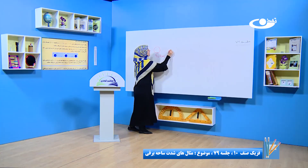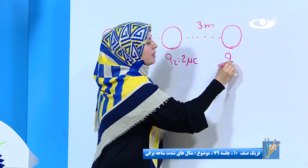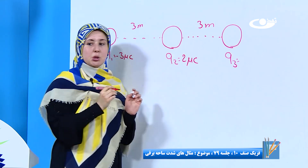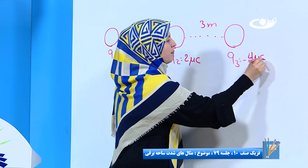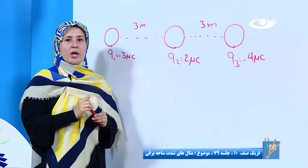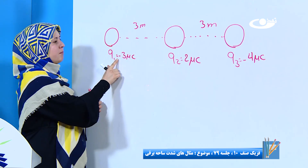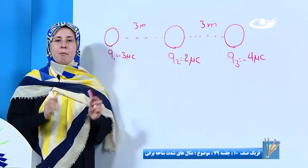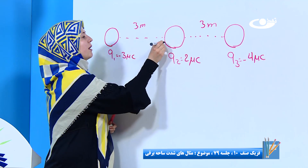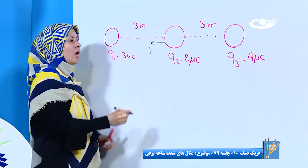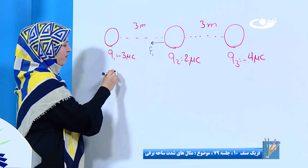باز هم به فاصله سه متر دیگه ذره سوم قرار گرفته و مقدار Q3 منفی چهار میکرو کولمب. حالی از ما گفته قوه‌هایی را پیدا کنیم که بر ذره دوم وارد می‌شن. ذره اول منفیه، ذره دوم مثبته، پس قوه‌ای که بین این دو به وجود می‌آید می‌شه جاذبه. پس جهت قوه به این سمت می‌باشه، ما این را F1 نام‌گذاری می‌کنیم.